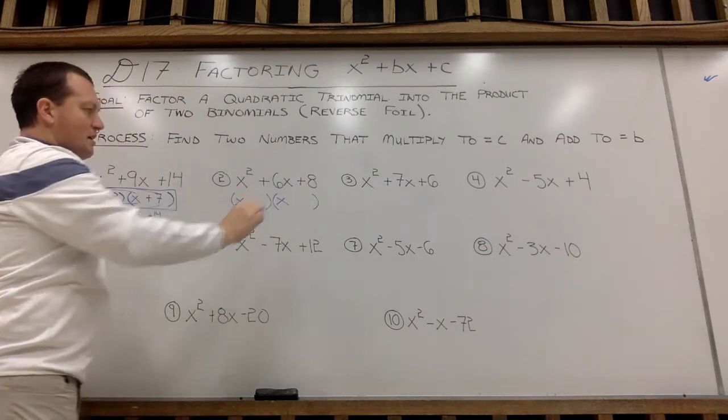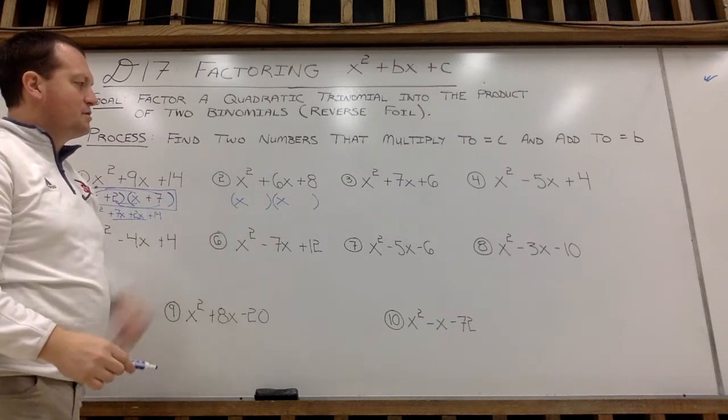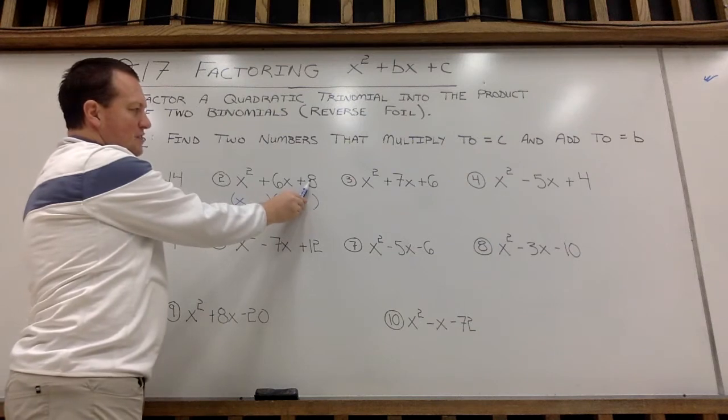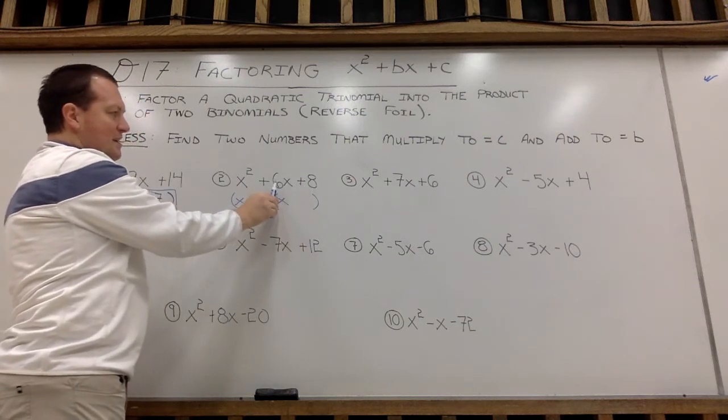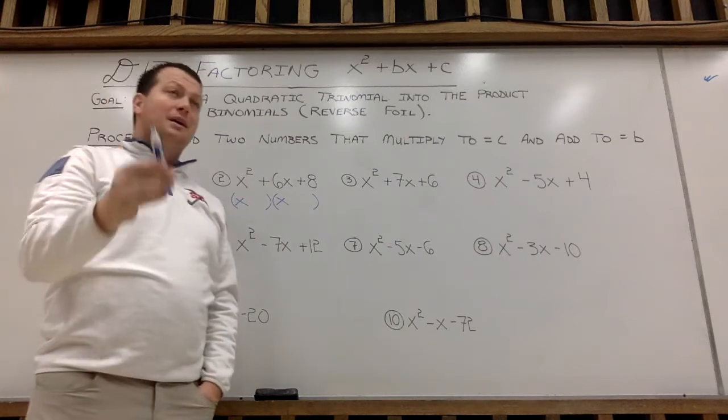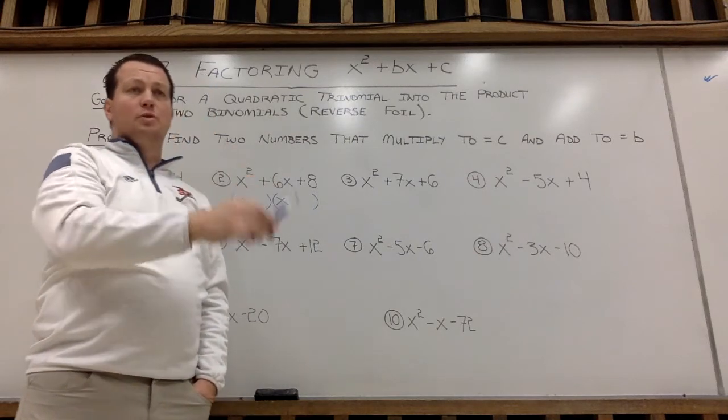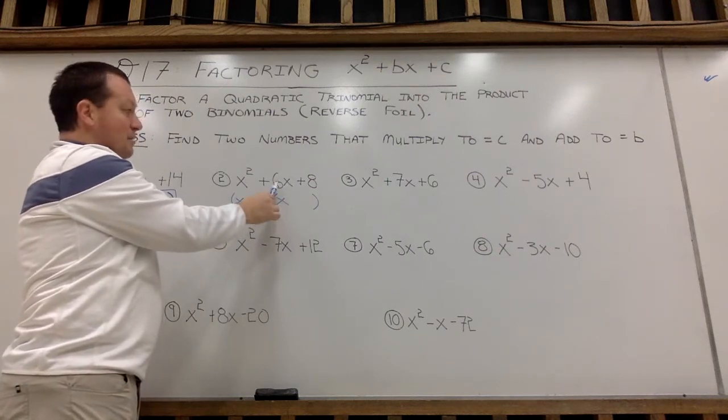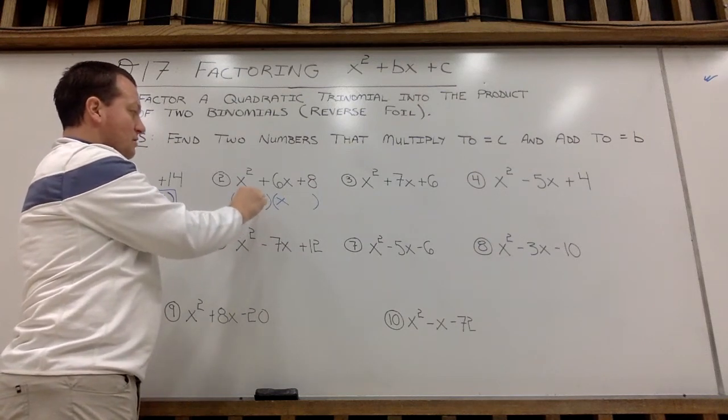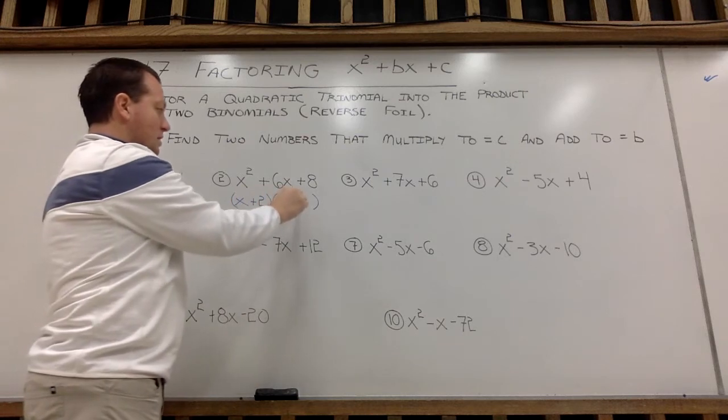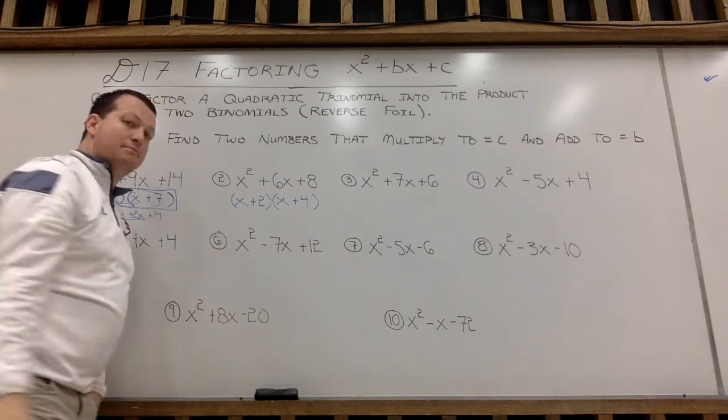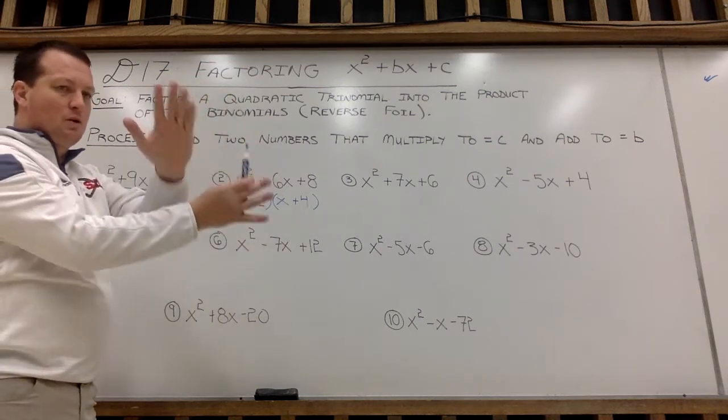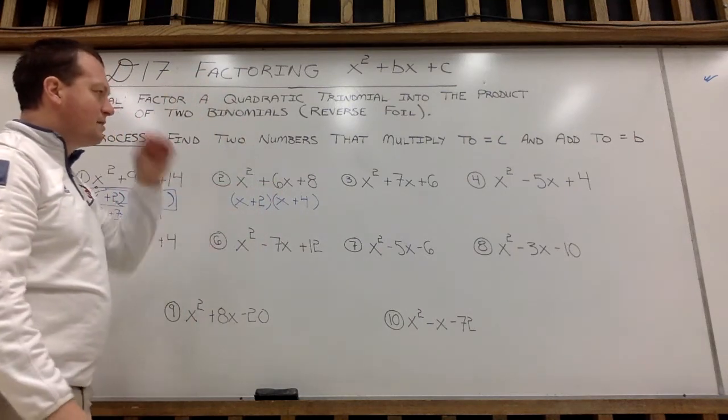Again, I'm always going to set up my two binomials with x and x. Now I'm going to look for two numbers that multiply to make c, which is 8, and then add together to make 6. Well, 8, I can have 1 and 8, or 2 and 4. You should be able to hopefully see that 1 and 8 adds to 9, but 2 and 4 does make 6. So x plus 2, x plus 4. Done. Of course you could have x plus 4 times x plus 2. Again, flipping the order of the binomials, that will not matter.